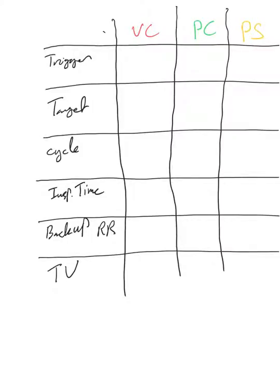Let's go over a quick comparison between all these modes. For volume control, the trigger is assist control. For pressure control, it's the same, assist control. For pressure support, it's assist only, patient trigger only.